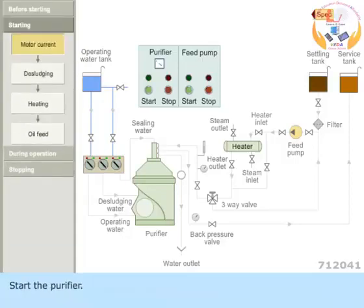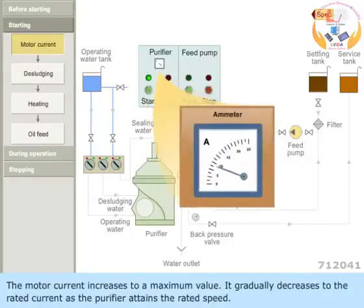Start the purifier. The motor current increases to a maximum value. It gradually decreases to the rated current as the purifier attains the rated speed.